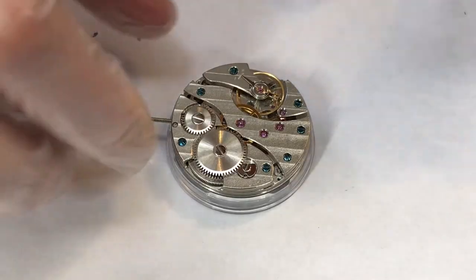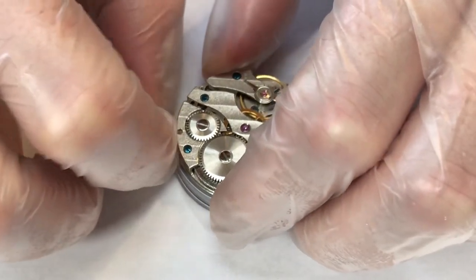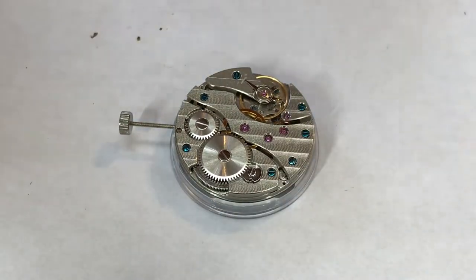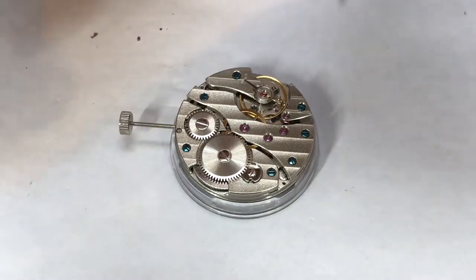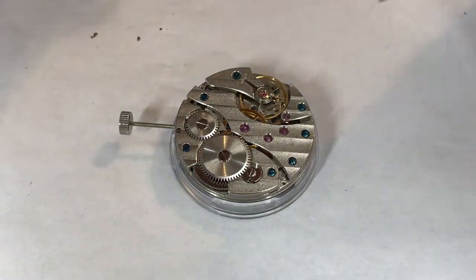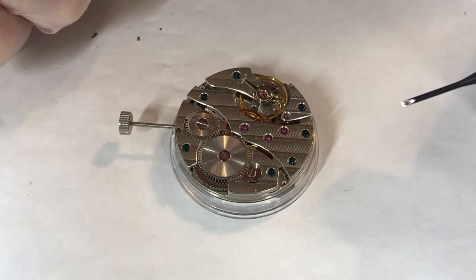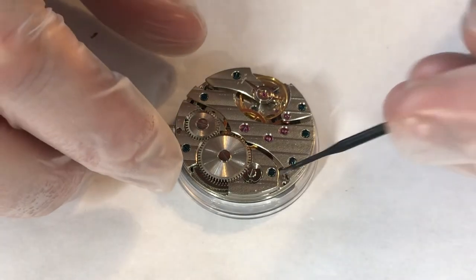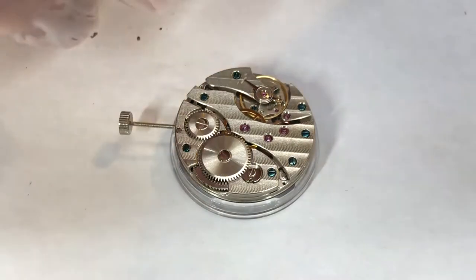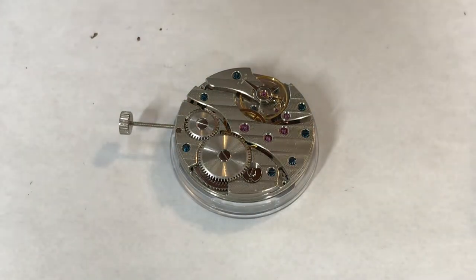You can see the watch is running at the moment. I'm just going to pull the stem out. This isn't a hacking movement. So you can see the movement didn't stop whenever I pulled the stem out to the setting position. At this point with it pulled out, I can unwind the mainspring by moving the click right here.